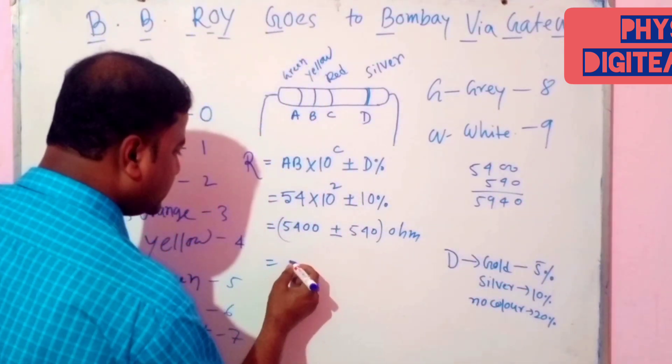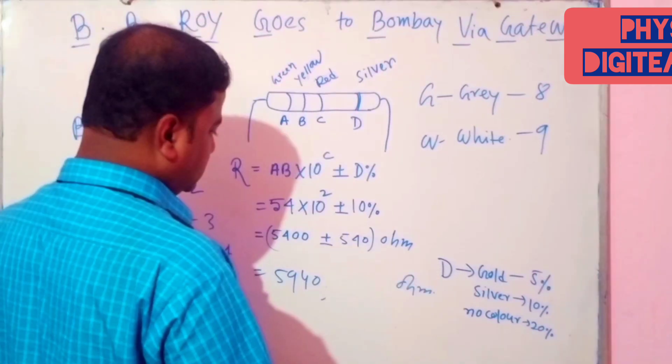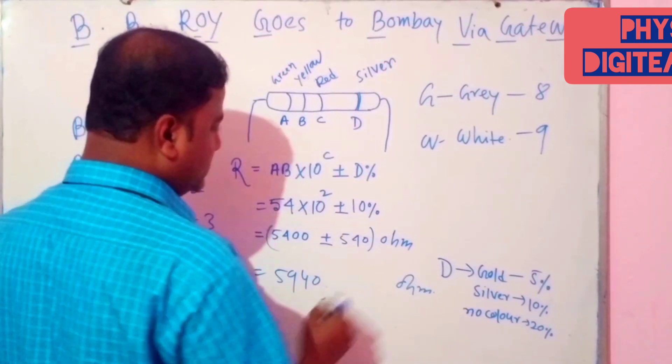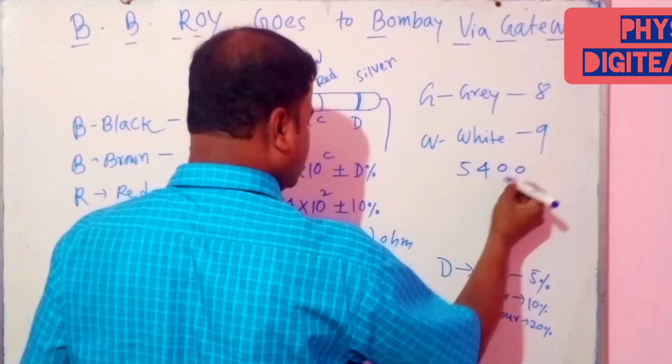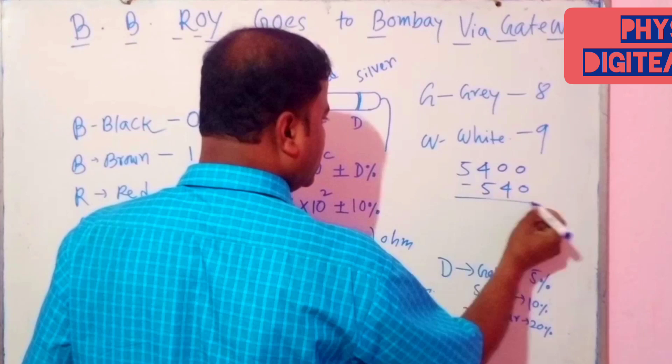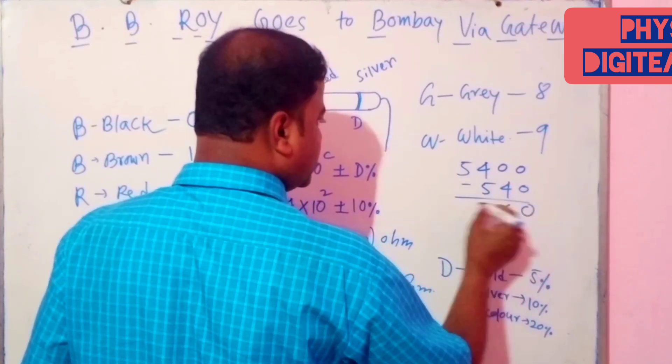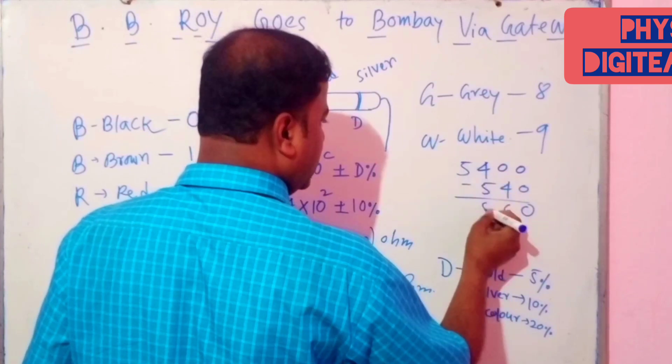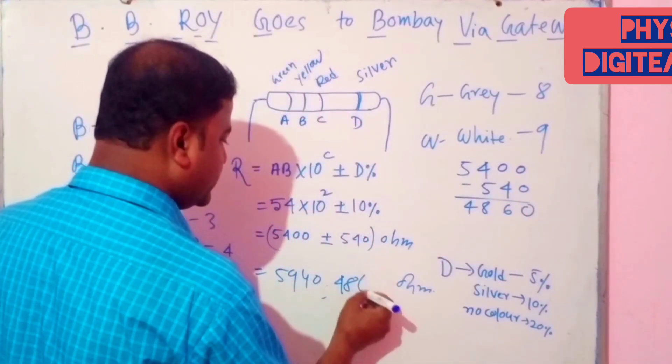The second value is 5400 minus 540. This is 4860.